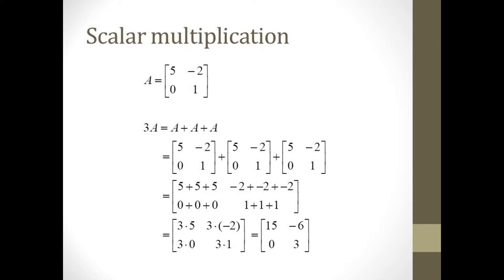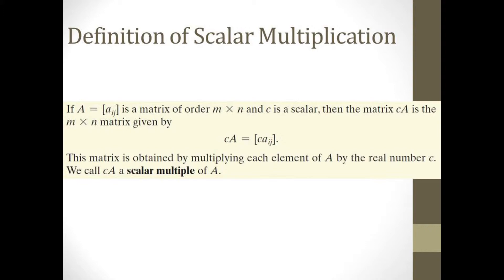Our next operation is multiplying a matrix by a constant, which is referred to as a scalar. If we think of multiplication of positive integers as repeated addition, then 3A means A plus A plus A. It's easy to see that we're just adding every element three times, which means we have three times every entry. So we can generalize: if A is a matrix and c is a scalar, then c times A means multiplying c times every element of A — that is, c times A sub ij.